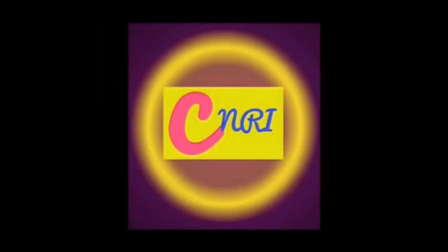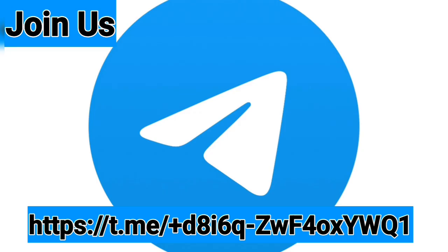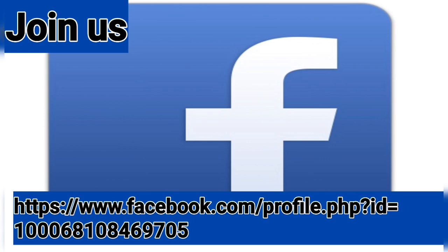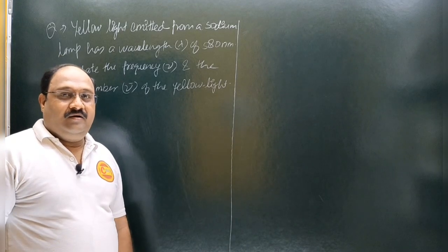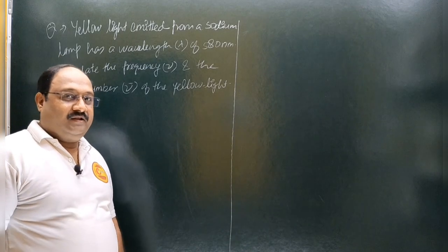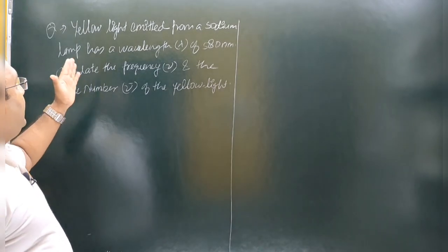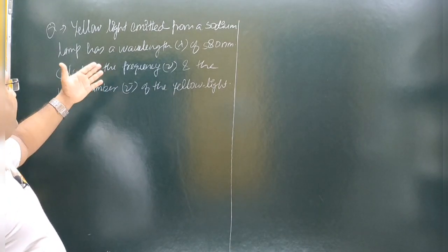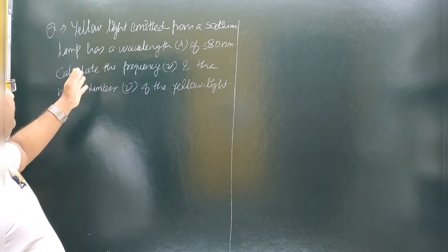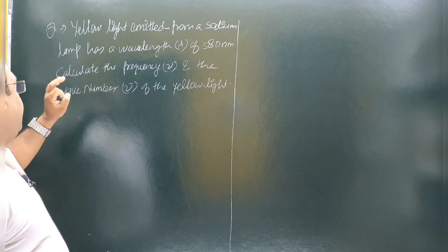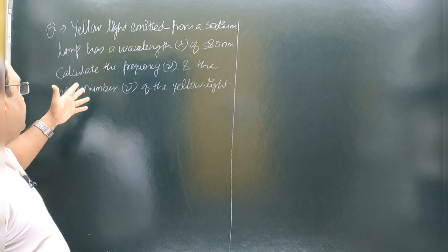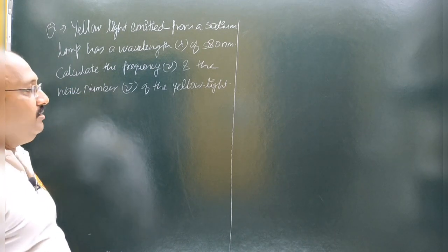Dear friends, this is Nishan Trastogi and you are watching CNRI. I have this question to solve: yellow light emitted from a sodium lamp has wavelength lambda equal to 580 nanometer. Calculate the frequency and the wave number of the yellow light.